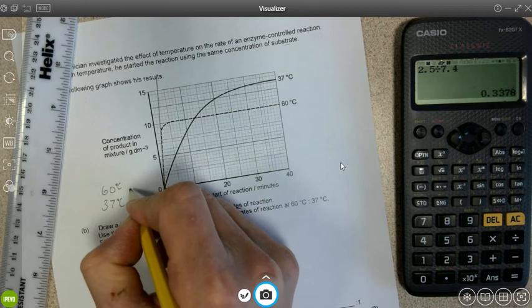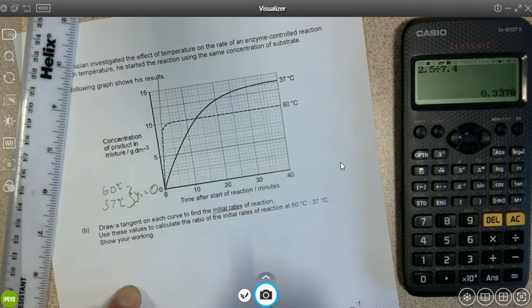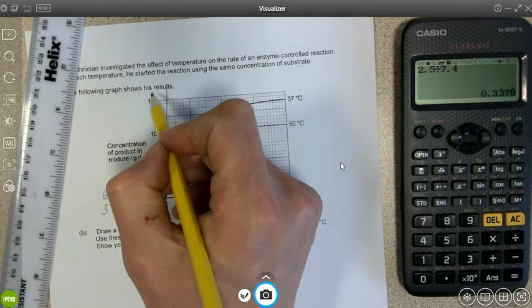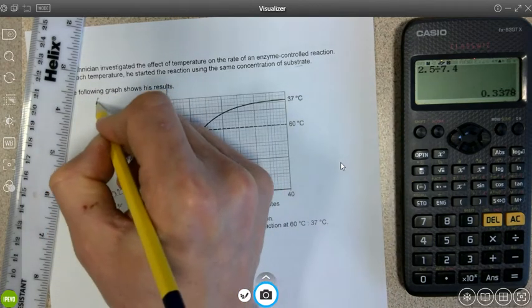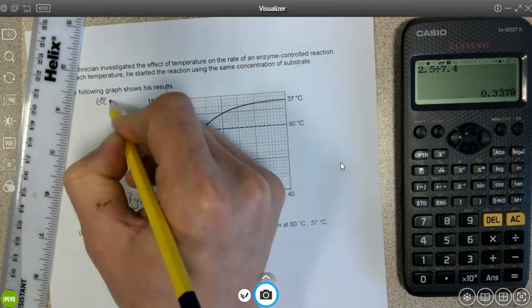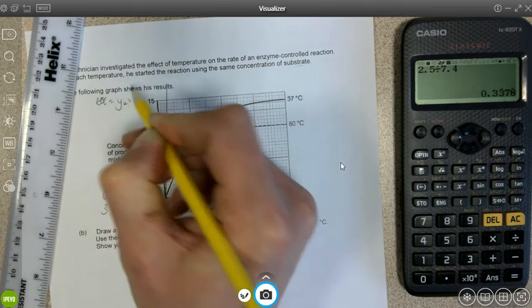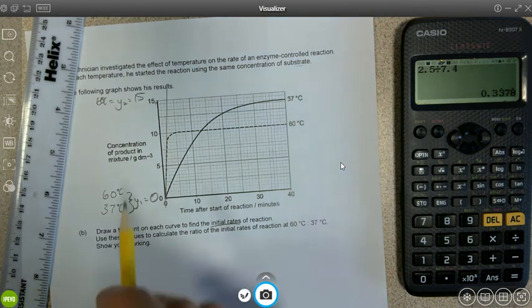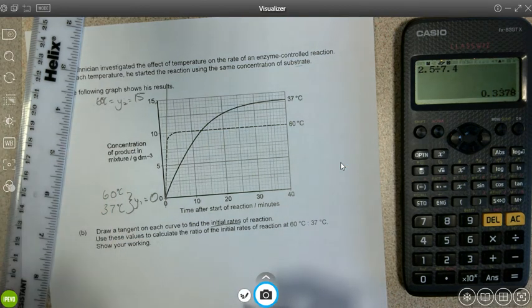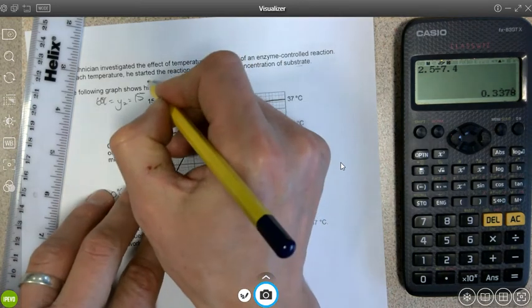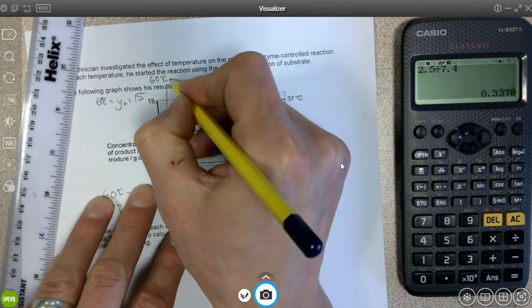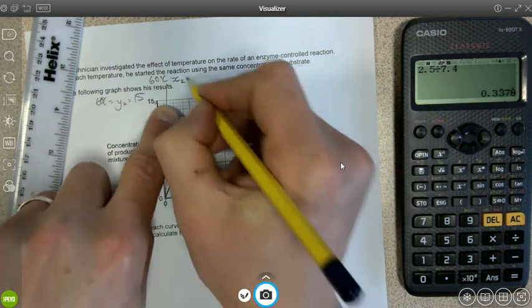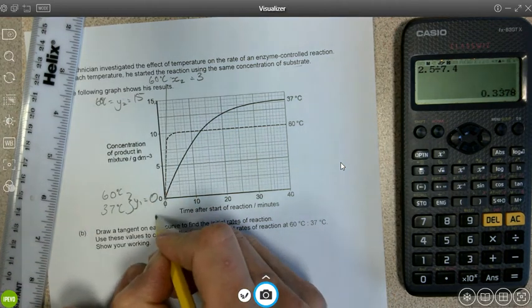So for 60 degrees, and in fact 37 degrees, for both of these, y1 is going to equal zero because we're starting at the initial rate. For both of them y1 will always be zero because we're starting at the initial rate. For 60 degrees, y2 is going to be equal to 15, that maximum concentration of the product. For 60 degrees, x2, that final time, is three minutes, and the initial time for both 60 and 37, the initial time is going to equal zero as well.